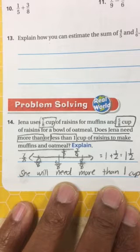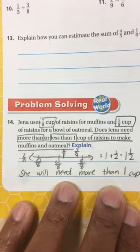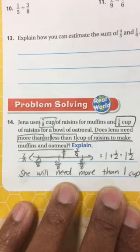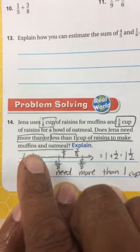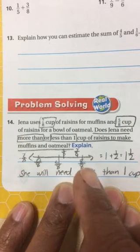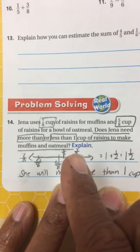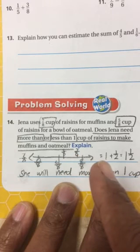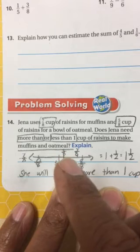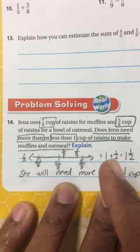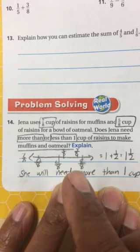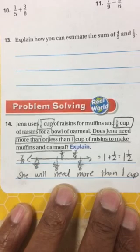So Jenna uses 7 eighths cups of raisins for muffins and 5 eighths cups of raisins for a bowl of oatmeal. So if she is going to make muffins and oatmeal, I need to combine those two. I have to figure out if it's more than one whole. 7 eighths is an even number, so I can do 0 eighths to represent 0, 8 eighths to represent a whole, so 4 eighths represent a half. So as you can see right here, 7 eighths is very close to being 8 eighths, so that's one whole. 5 eighths is very close to being 4 eighths, so that's one half. So if I combine those together, that's one and one half. So she will need more than one cup. Please complete the rest of the problems. Thank you.